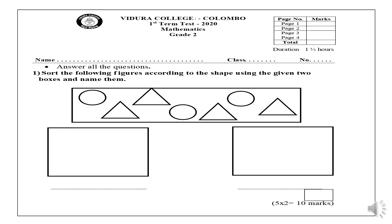Answer all the questions. Question 1: Sort the following figures according to the shape using the given two boxes and name them.